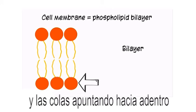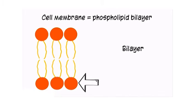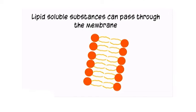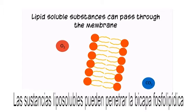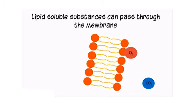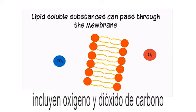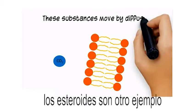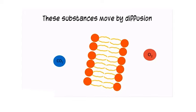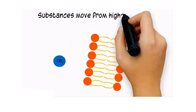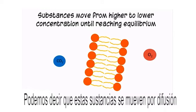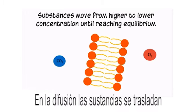Lipid soluble substances can pass through the phospholipid bilayer. Some examples of lipid soluble substances include oxygen and carbon dioxide. Steroids are another example. We can say these substances move by diffusion. In diffusion, substances move from higher to lower concentration until reaching equilibrium.